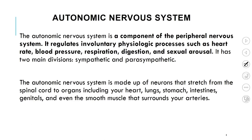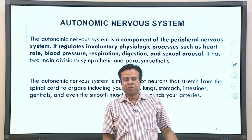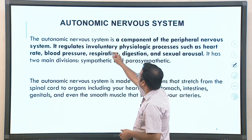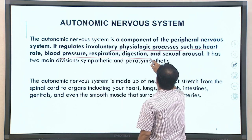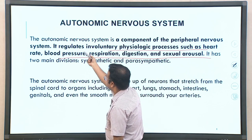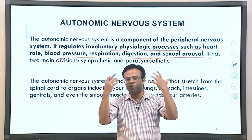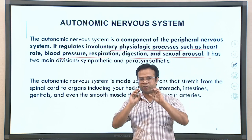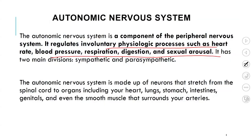The autonomic nervous system is central to understanding emotions. As a component of the peripheral nervous system, it regulates all involuntary physiological processes such as heart rate, blood pressure, respiration, digestion, and sexual arousal. It has sympathetic and parasympathetic divisions, as already discussed. This system is made up of neurons that stretch from the spinal cord to organs including the heart, lungs, stomach, intestines, genitals, and smooth muscles around the arteries — passing messages from the brain to different organs.